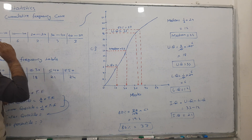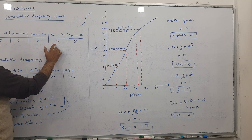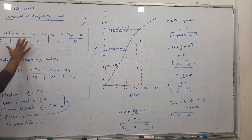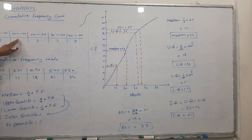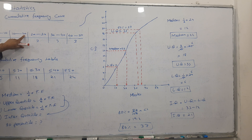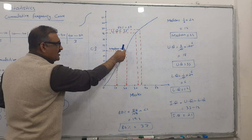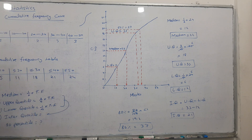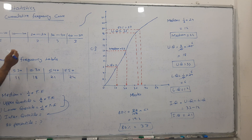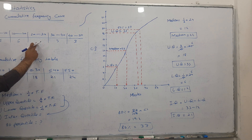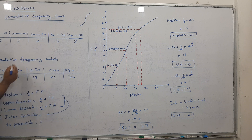Sometimes a frequency value may be missing in the table. If a frequency is missing, the technique is: find the two surrounding upper-boundary marks on the x-axis — say 10 and 20 — go up to the curve, and subtract the two CF values. For example, at 20 I have CF = 11 and at 10 I have CF = 5, so 11 minus 5 gives 6. Similarly for 30 and 20: 18 minus 11 gives 7.